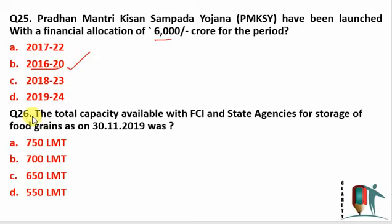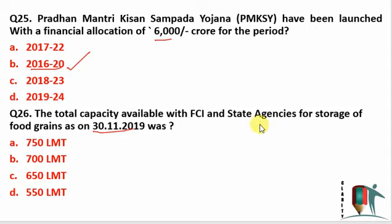The next question: what is the total food grain storage capacity available with FCI and state agencies as on 30 November 2019? This data has been mentioned in the Economic Survey report, and food capacity storage systems are part of the syllabus. The right answer is 750 LMT — LMT stands for lakh metric tons. So the total available capacity with FCI and state agencies is around 750 LMT.